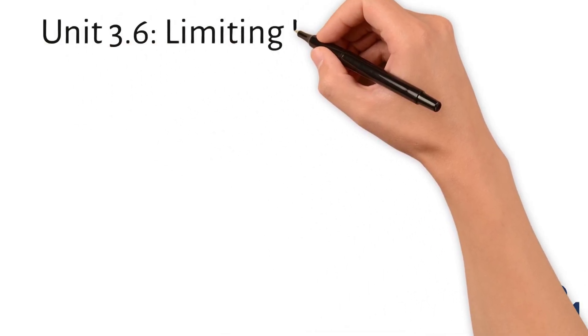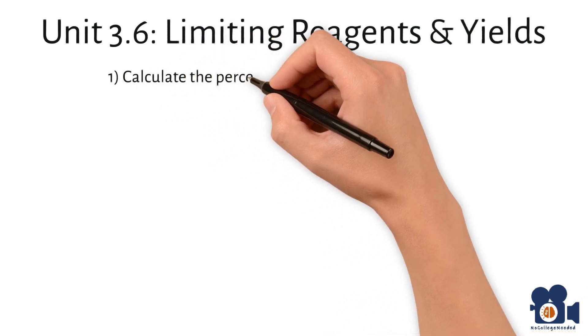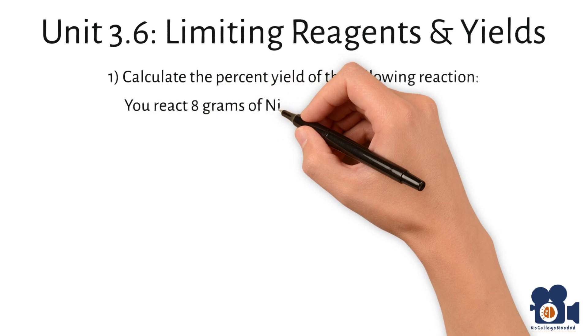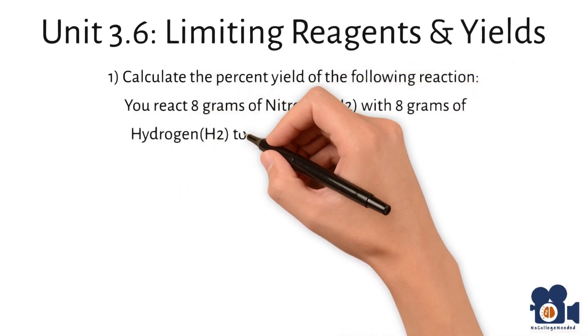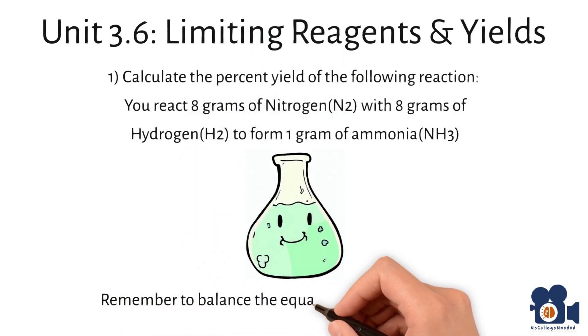Unit 3.6, Limiting Reagents and Yields. Calculate the percent yield of the following reaction. You react 8 grams of nitrogen N2 with 8 grams of hydrogen H2 to form 1 gram of ammonia NH3. Remember to balance the equation and convert to moles.